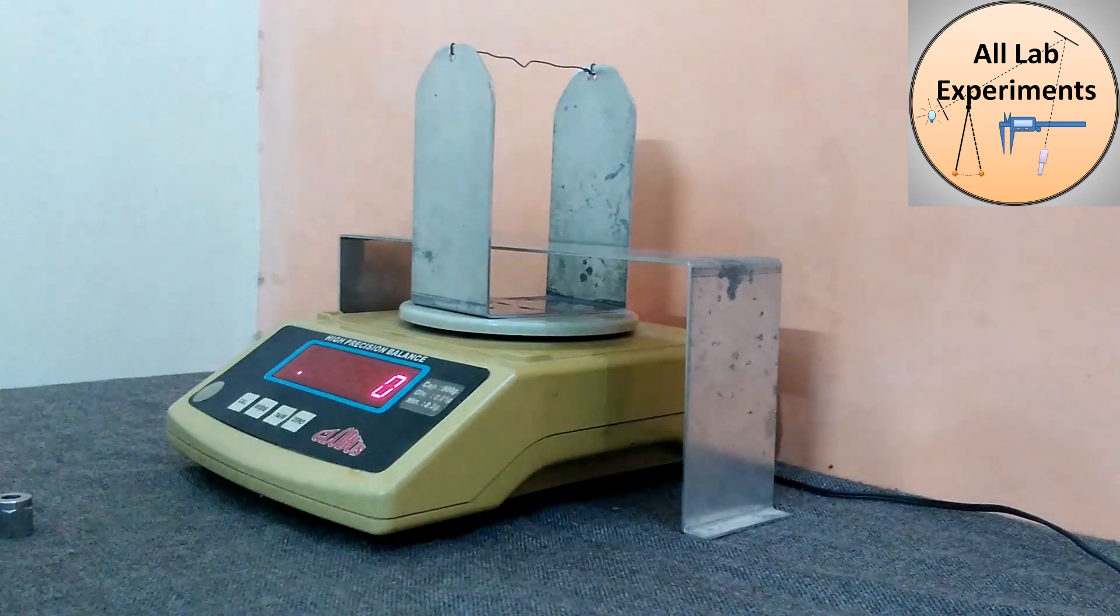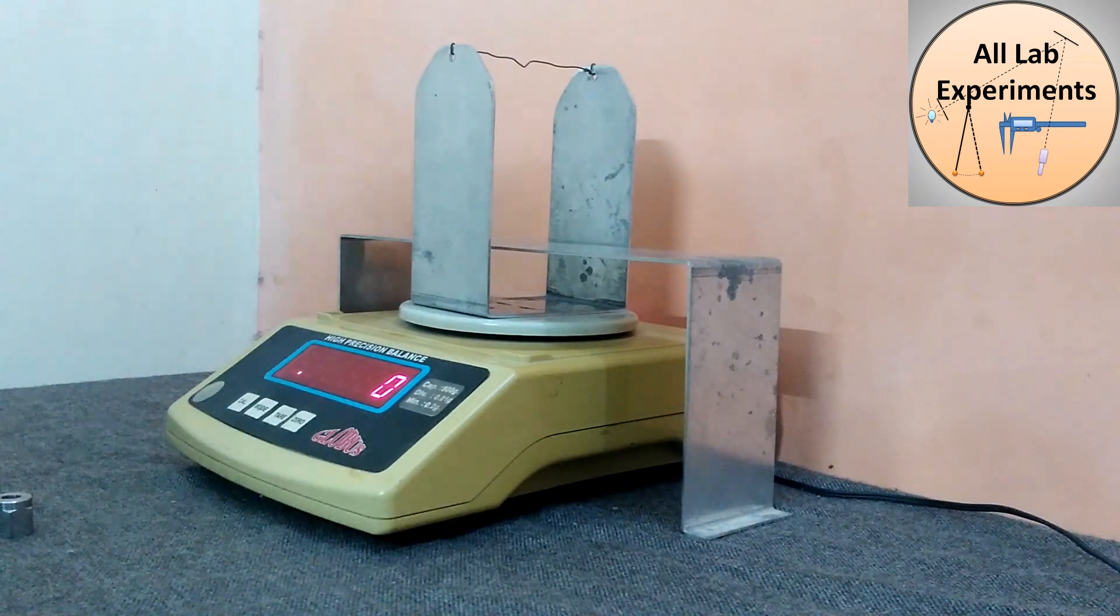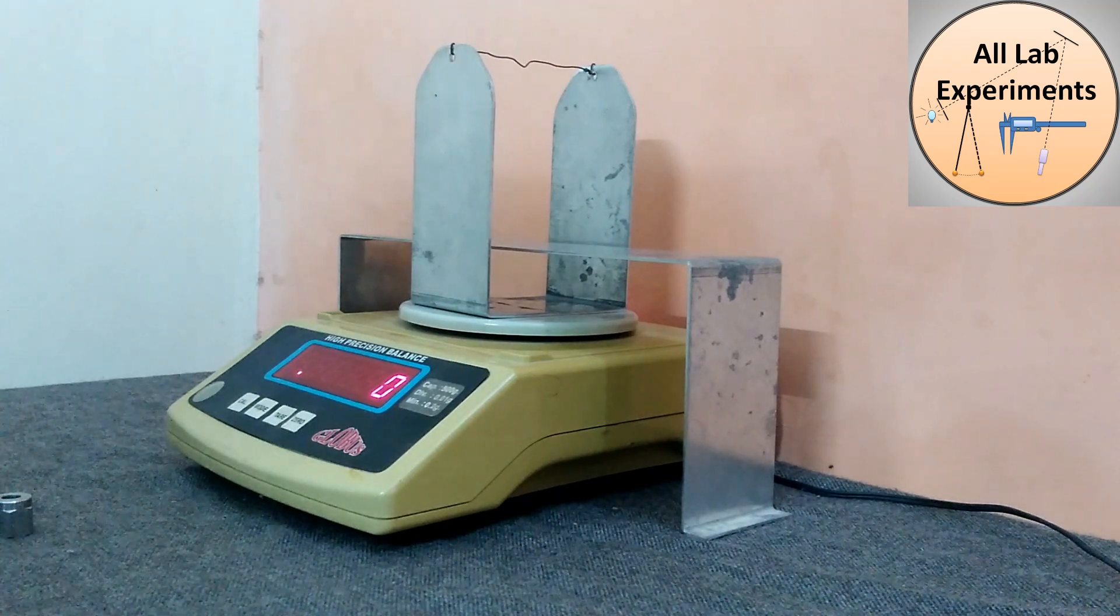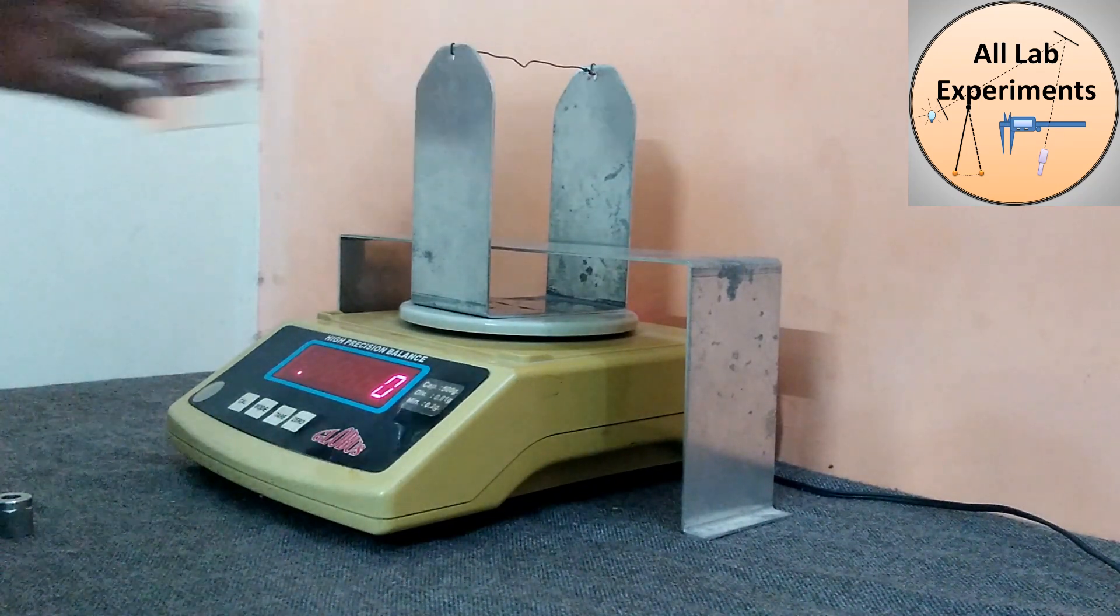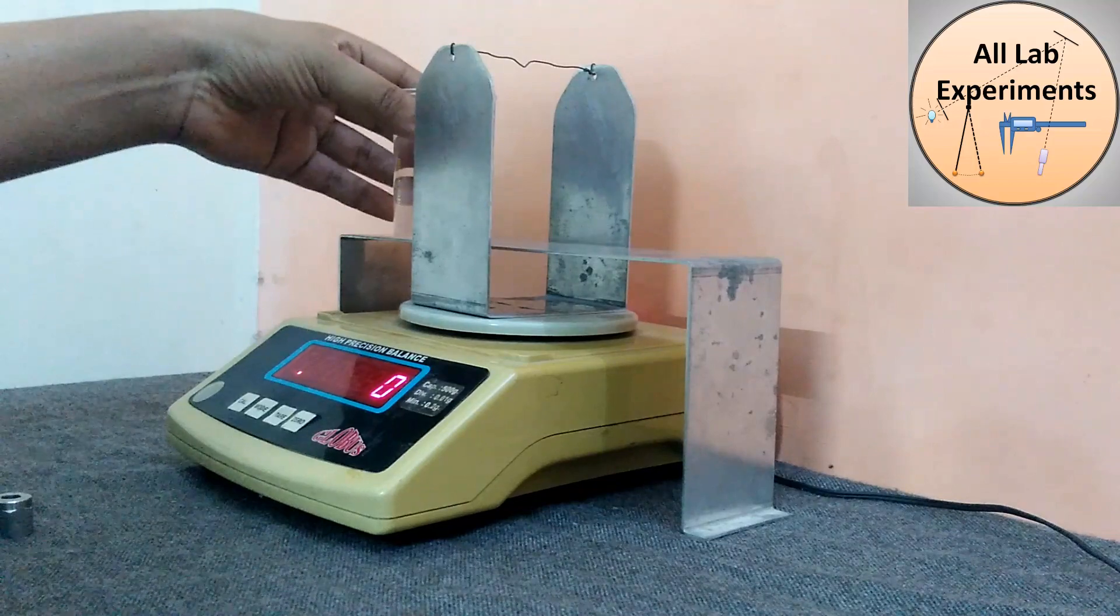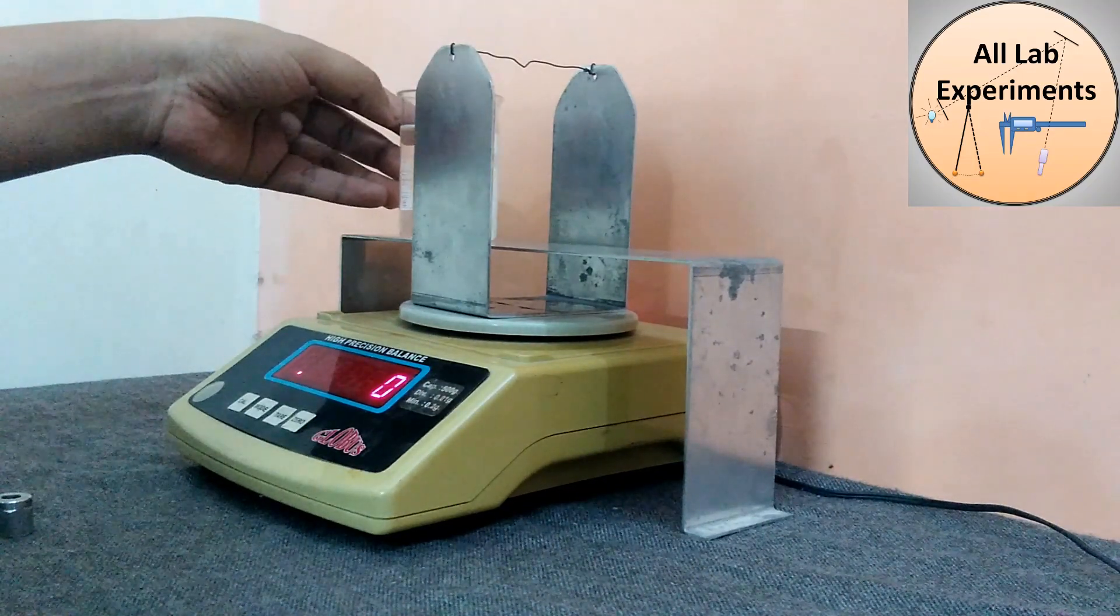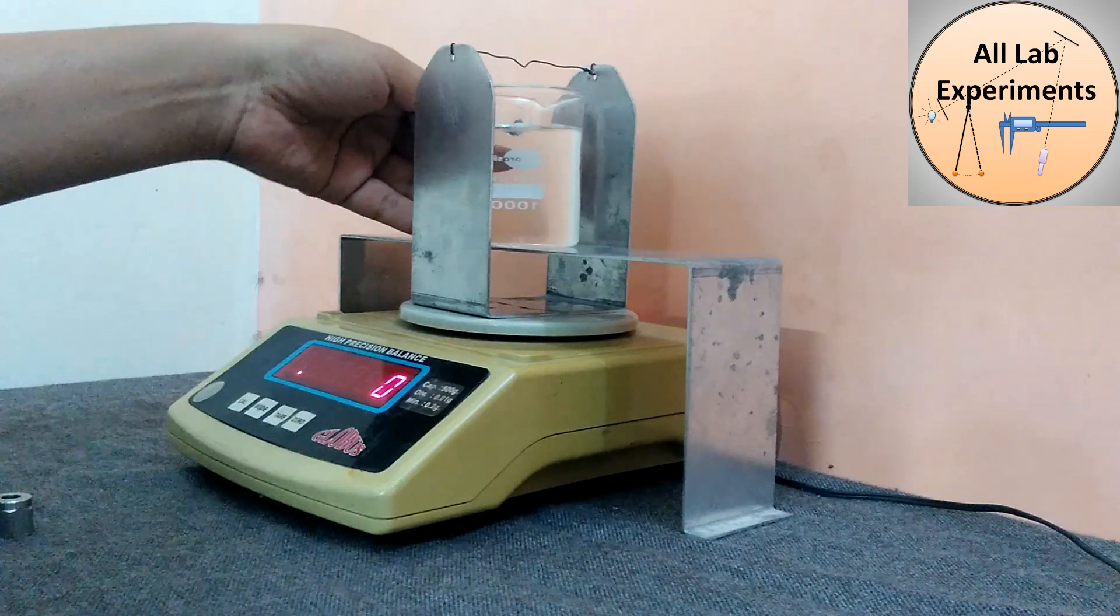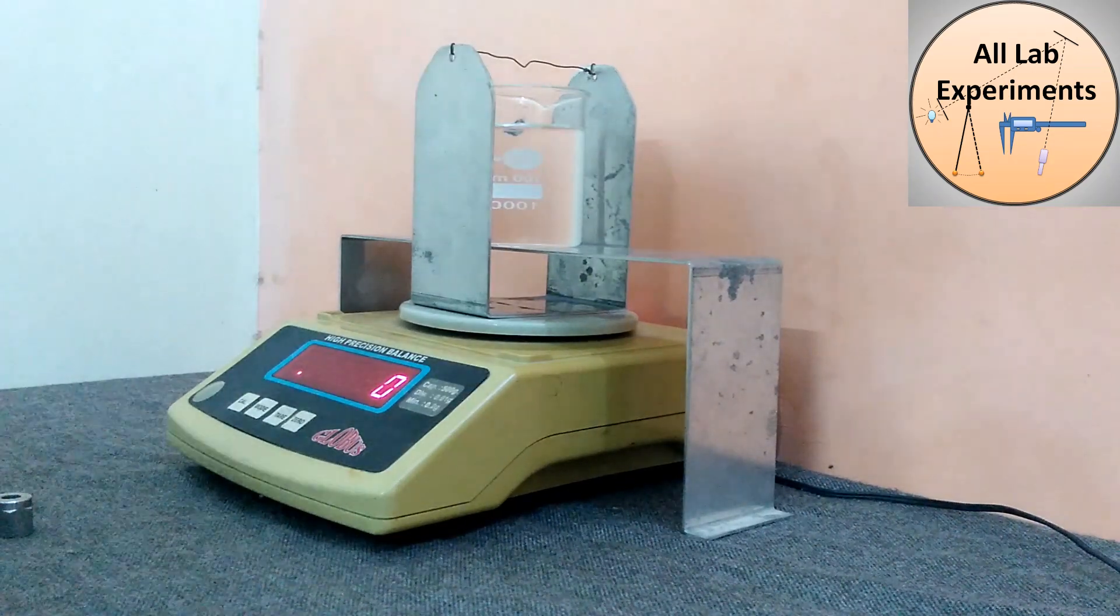Now we will measure the weight of this irregular body when this body is immersed in water. For that, we will put a beaker on it.